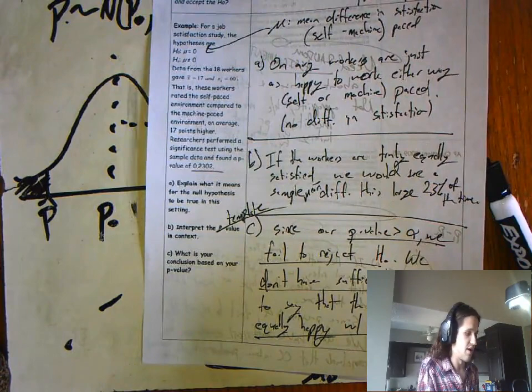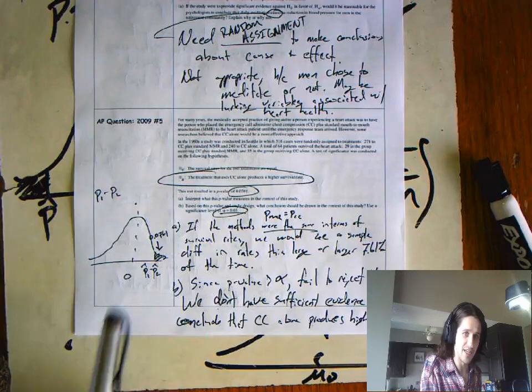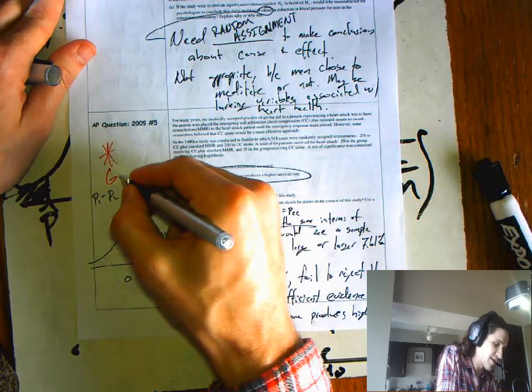Okay, so we did that. We had a little bit of practice dealing with our machine and self-paced thing. We did a p-value thing there. On the back side, we talked about drawing conclusions based on p-values, interpreting p-values in context. This question right here, 2009 number five.